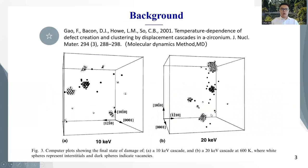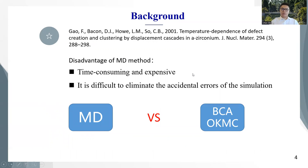Professor Goffey's group has already used the molecular dynamics method to simulate the primary radiation damage in zirconium. However, there are several disadvantages of the MD method simulation. First, this method is really time-consuming and expensive, so it's difficult to eliminate the statistical errors of the simulation. In this way, I want to use the BCA model and the OKMC method to see which method is better to simulate this process.